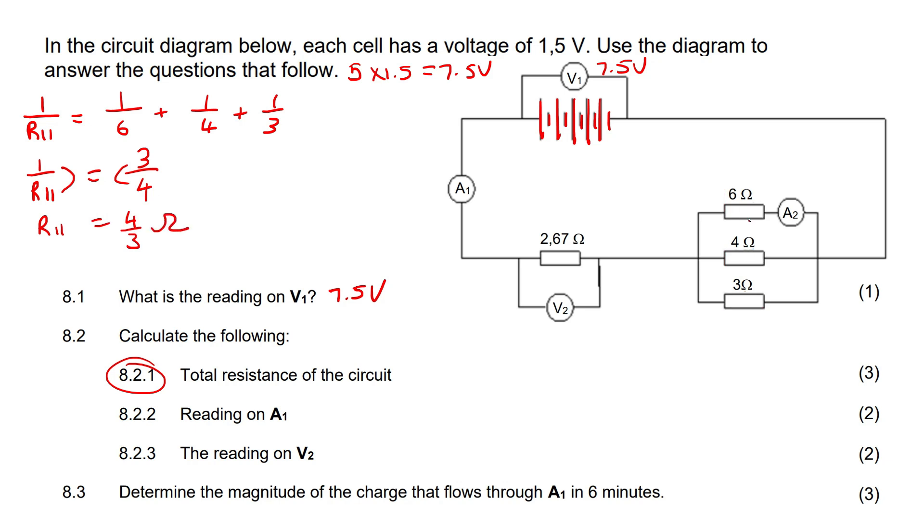Now we've got all of that combined. We just add that with this one, so 4 over 3 plus 2.67 will give you exactly 4 ohms.